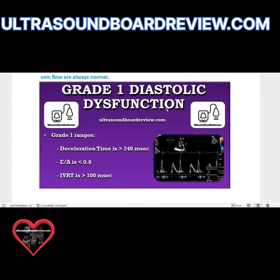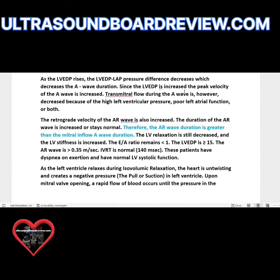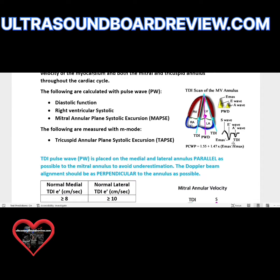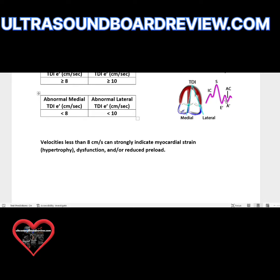The next thing you need is TDI — Tissue Doppler Index. You will place your cursor perpendicular to the mitral valve annulus, and your sample gate or sample volume will be placed parallel to the mitral valve annulus, about two to three millimeters inferior. You get these TDI waveforms, which should be below the baseline, and we call them the E prime and the A prime.